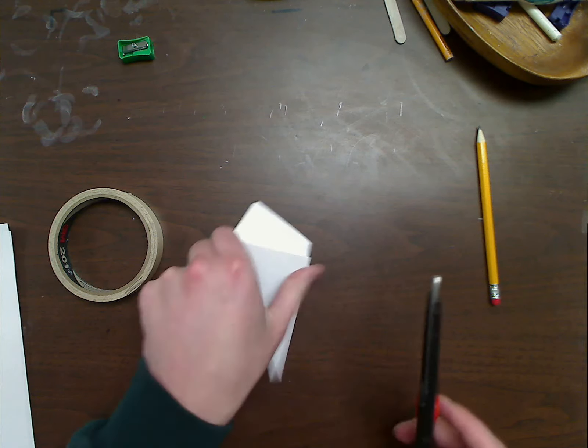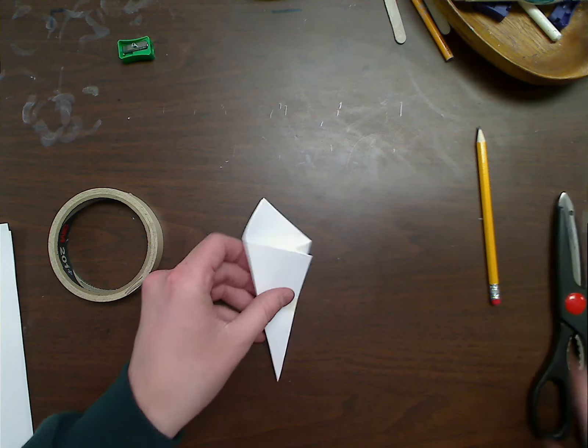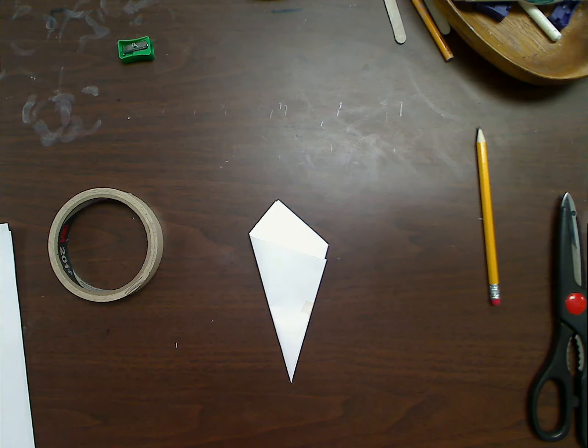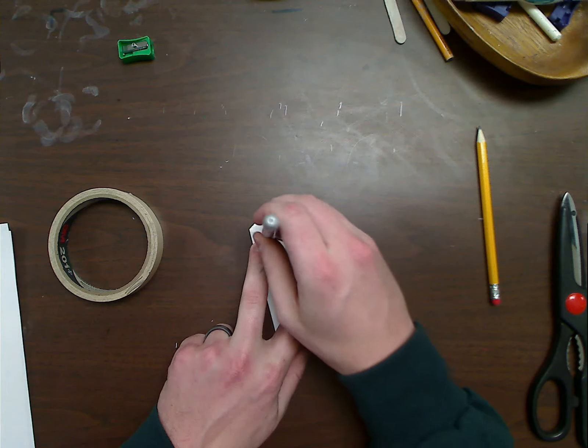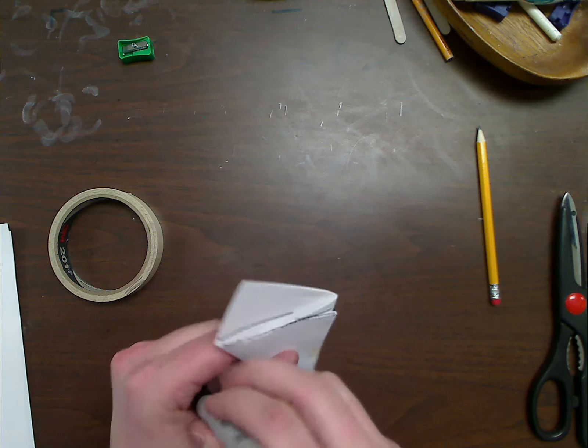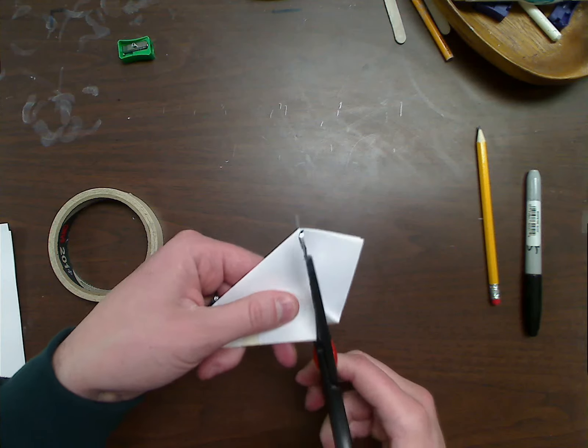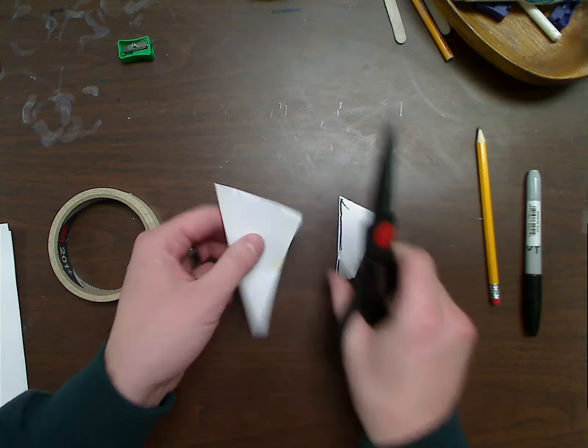I can use my scissors for the next step. I want to cut off this extra part here. Let me make a mark so you guys can see it. Right here, right at the top of that folded paper, we're going to cut off this extra. So it looks something like that.